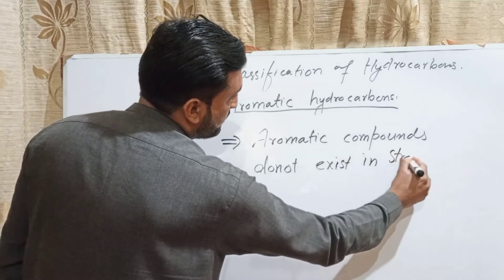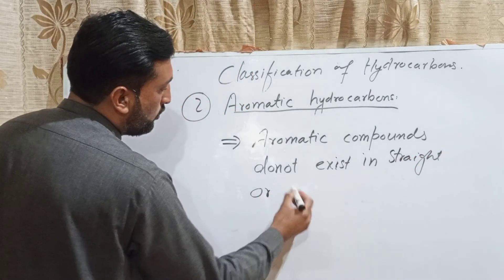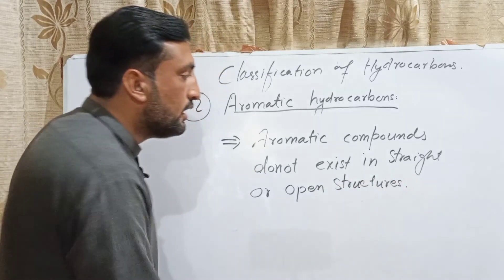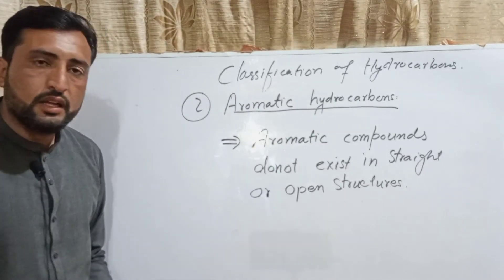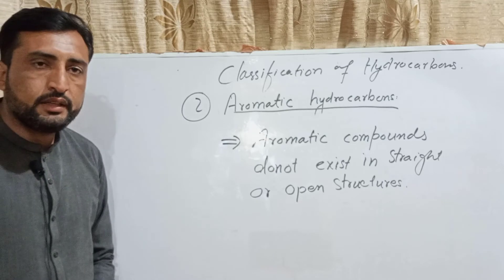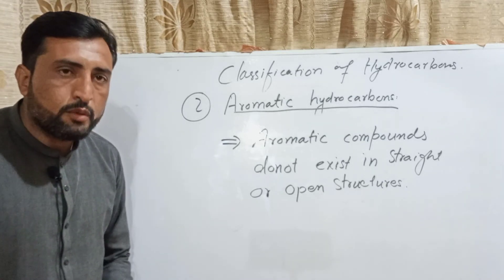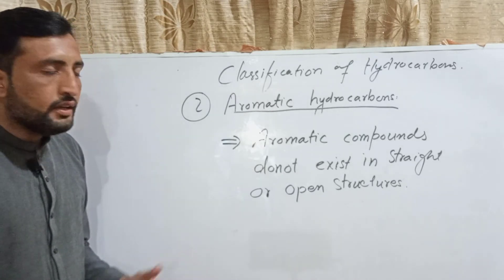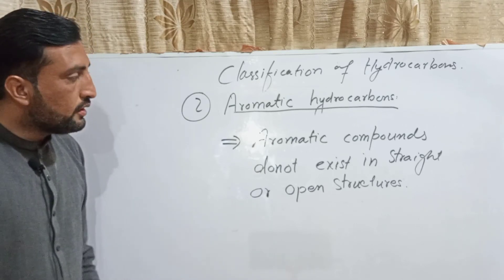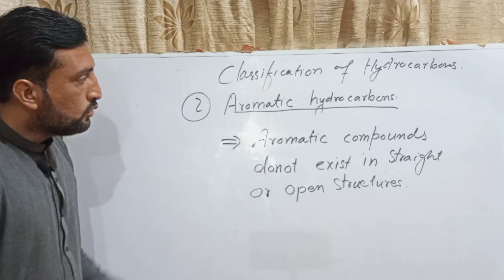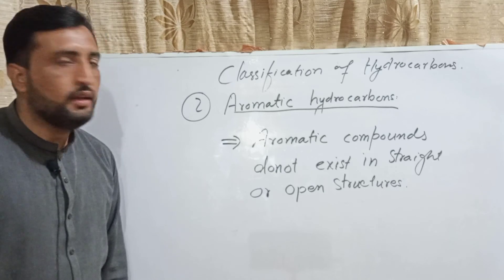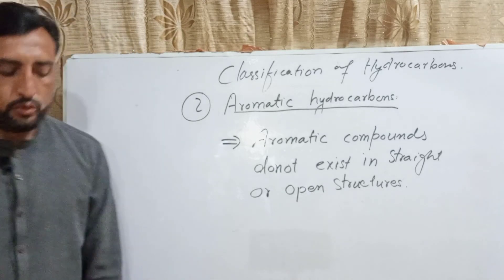Aromatic compounds do not have open or straight structures. Benzene has 6 carbons and 6 hydrogens with alternating single and double bonds — 3 single bonds and 3 double bonds. This is what makes aromatic hydrocarbons different from alkenes. This concludes our study of the classification of hydrocarbons. Please like, subscribe to the channel, share, and thank you.